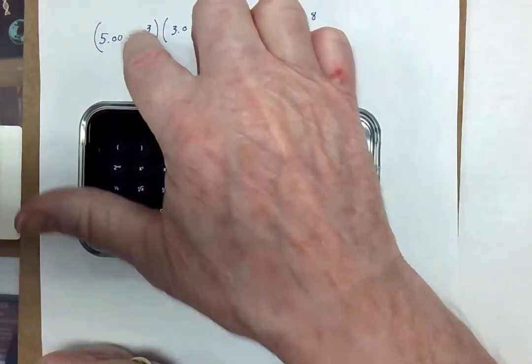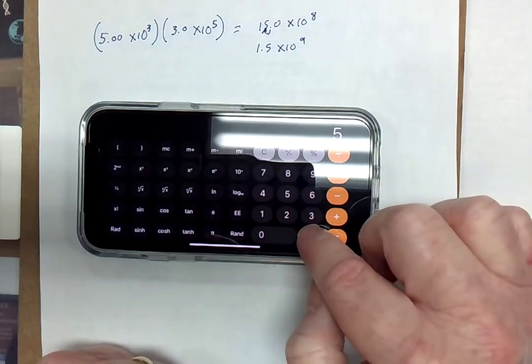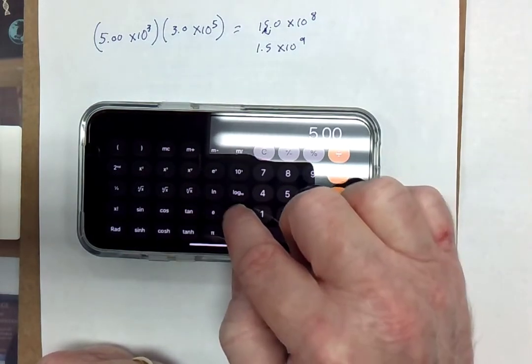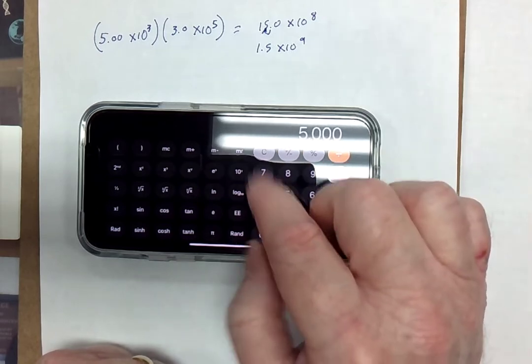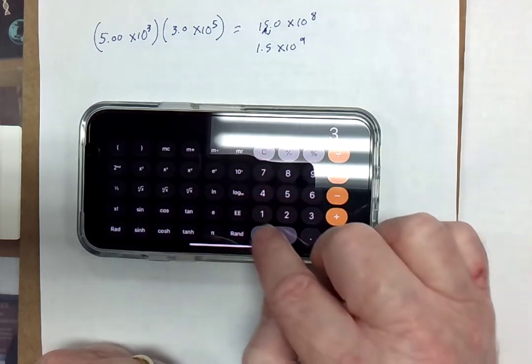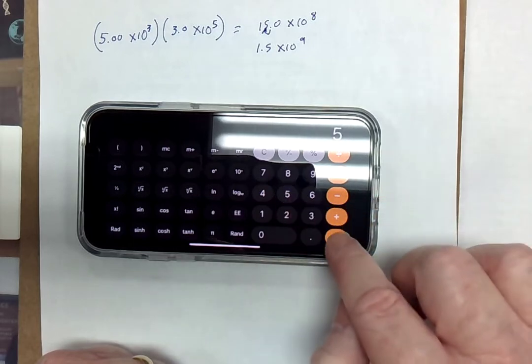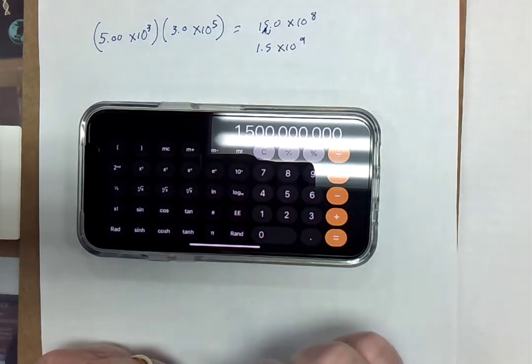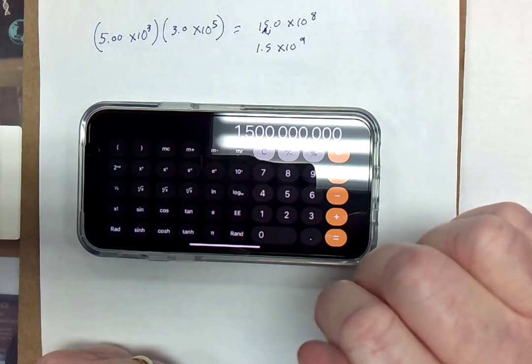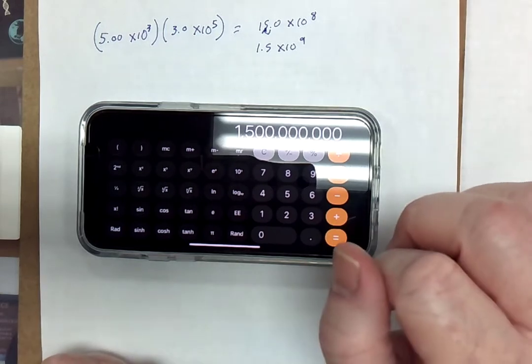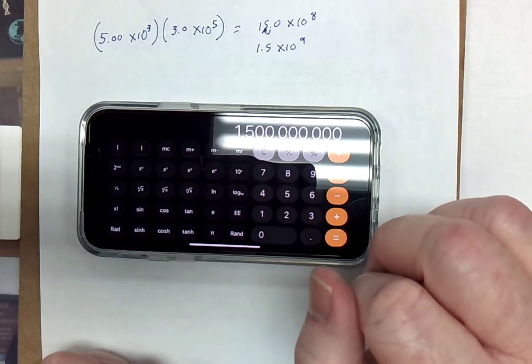And I could do this same problem, 5.00 EE to the third multiplied by 3.0 EE to the fifth equals, and there you go, 1.5 times 10 to the ninth. It understands scientific notation also.